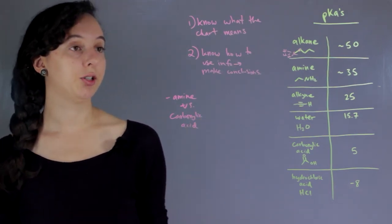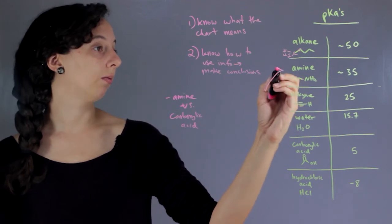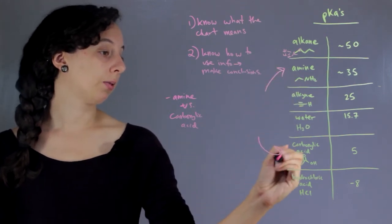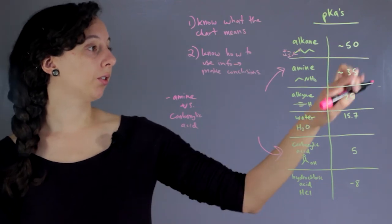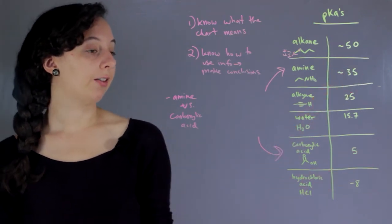You identify the two groups you're looking at. We have amine here, carboxylic acid here, and we have our numbers, 35 and 5. And remember we're looking for the more acidic.